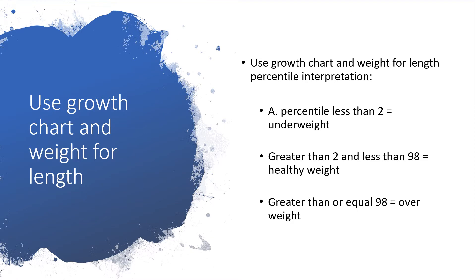We can use the growth chart for weight and length. The percentile interpretation is as follows: a percentile less than 2 equals underweight; greater than 2 and less than 98 is healthy weight; greater than or equal to 98 is overweight. You can use the growth chart alone to determine whether a child is underweight, within normal weight, or overweight.